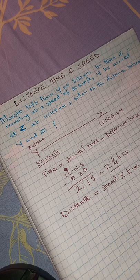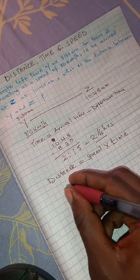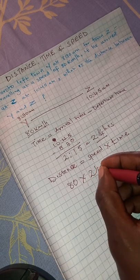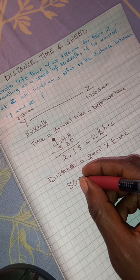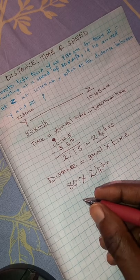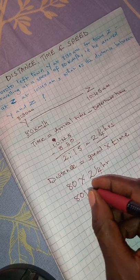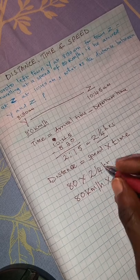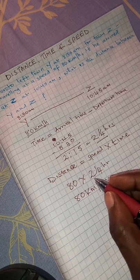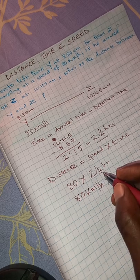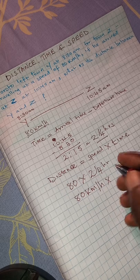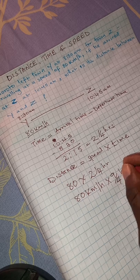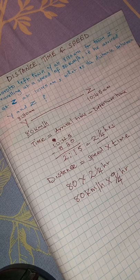How are we going to go about it? We are going to say 80 times 2 and a quarter. These are hours and these are kilometers per hour. Therefore, we are going to say 80 kilometers per hour times, you change this one to improper fraction, whereby you are going to get 9 over 4. You are going to multiply here by 9 over 4. These are hours.